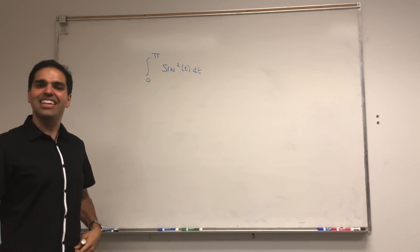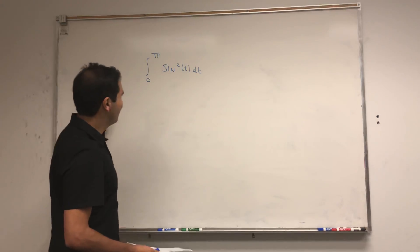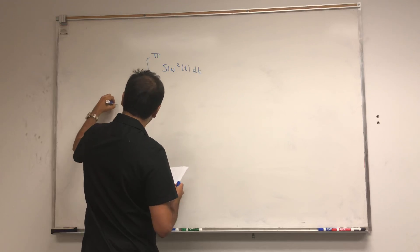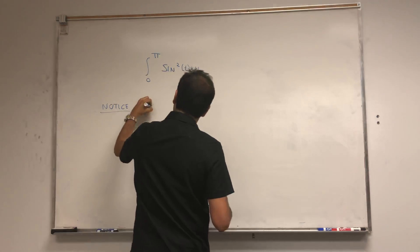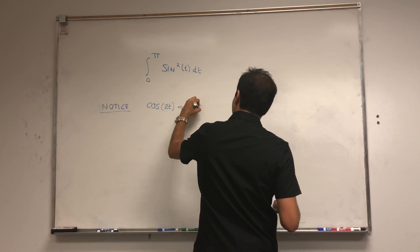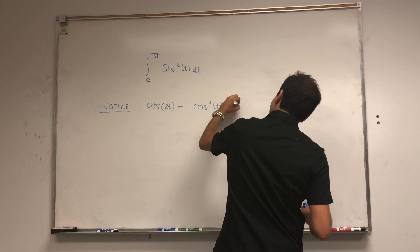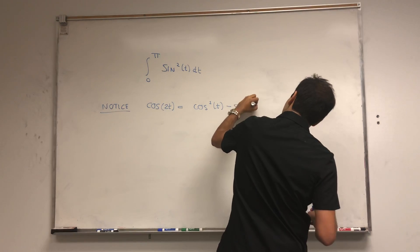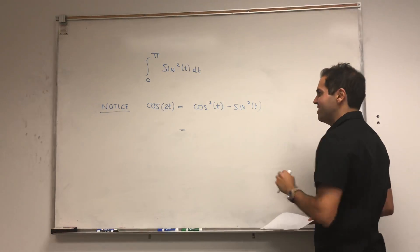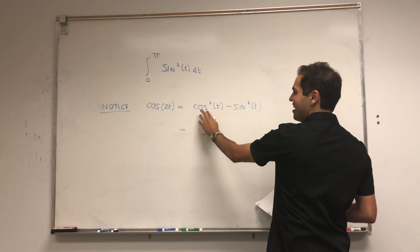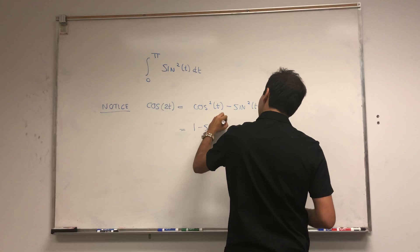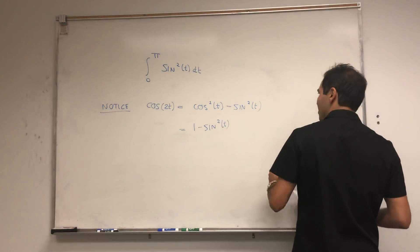The way to evaluate this is to notice that if we replace this by cosine of 2t, it would be much easier to evaluate. Fortunately, we can write sine squared in terms of cosine of 2t. Notice cosine of 2t is actually equal to cosine squared of t minus sine squared of t by the double angle formula, and we want to write this in terms of sine squared.